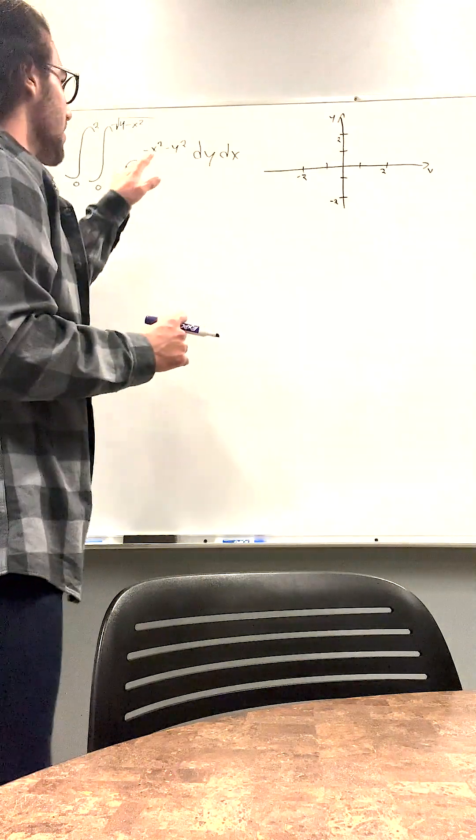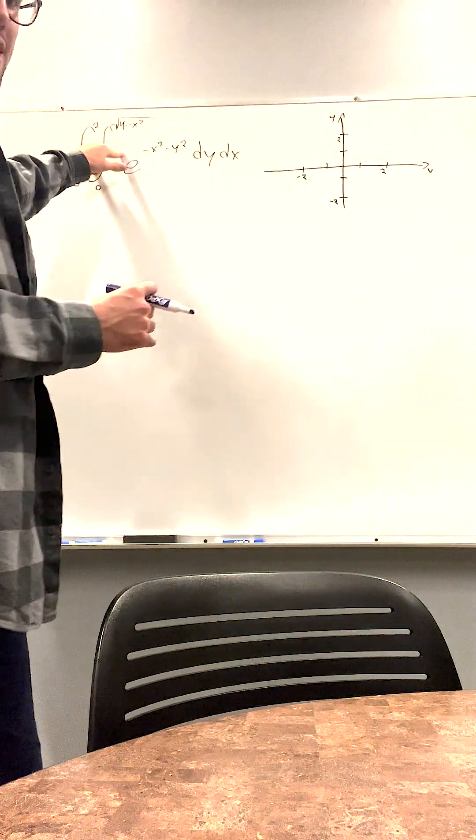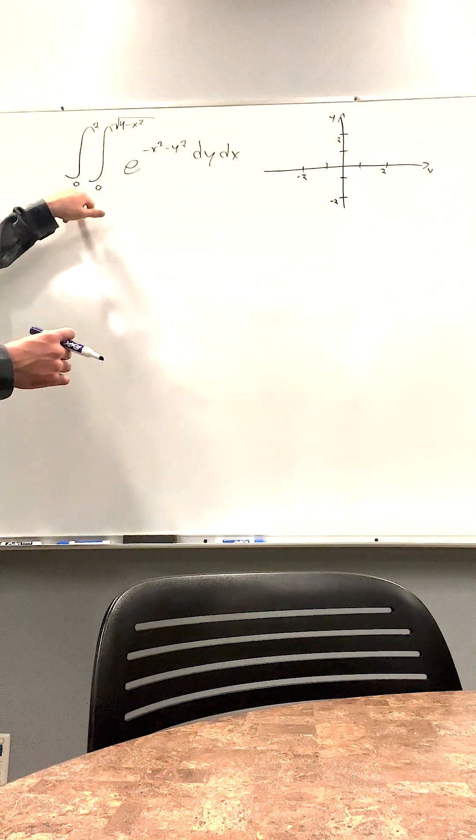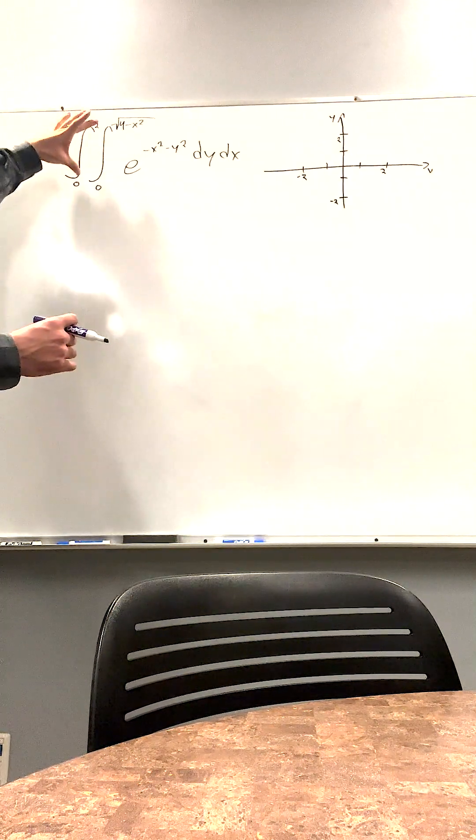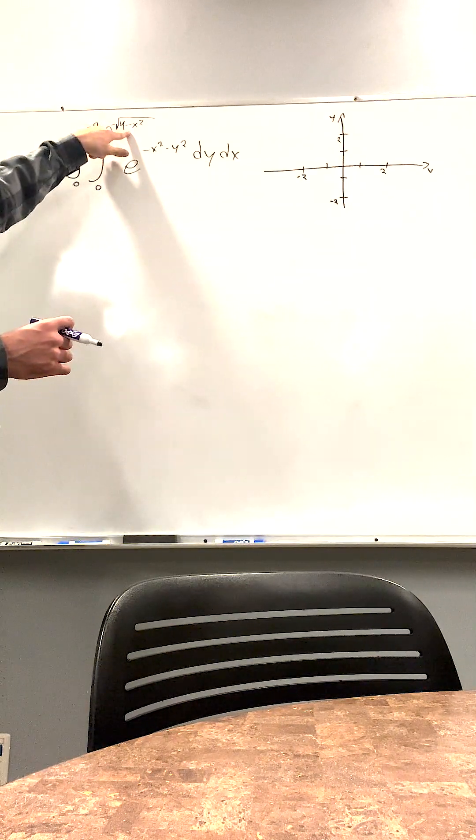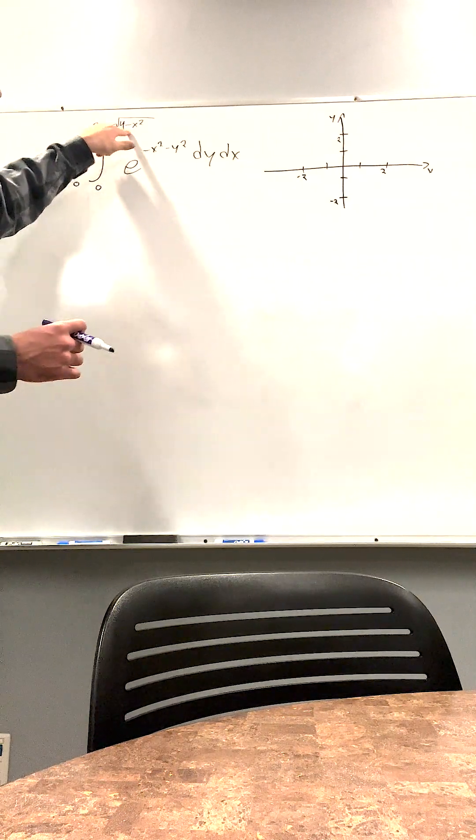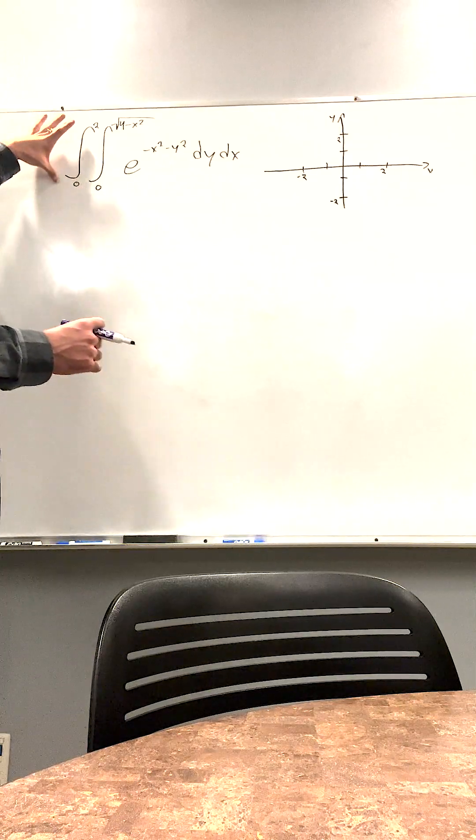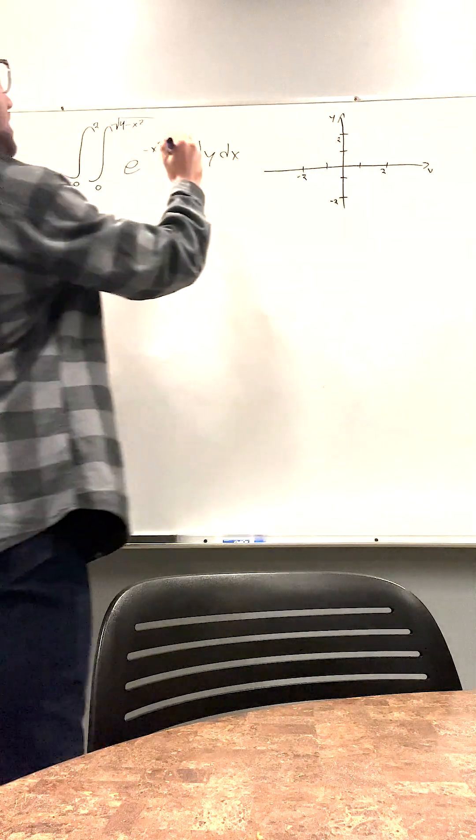So what we're gonna start with is our bounds. So what do we know about these bounds? Well we know that y dy goes to these. So y goes from 0 to square root of 4 minus x squared. And we know that x corresponds to these two which goes from 0 to 2. So let's write that down.